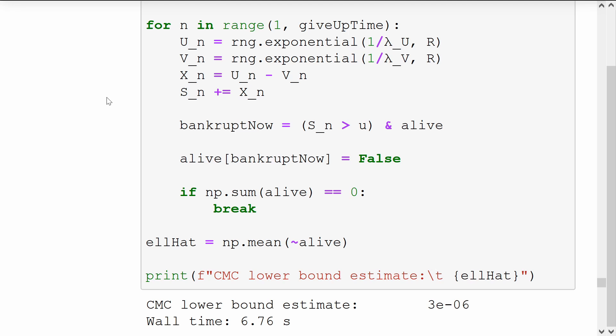We look at whether or not bankruptcy has just occurred by calculating the vector of true or false for whether or not the cumulative sum has exceeded our threshold of U. We only want to consider those replications which haven't already hit bankruptcy in the past, so we take the AND operation with the alive vector.